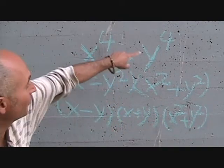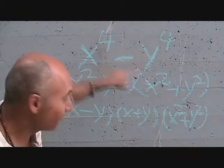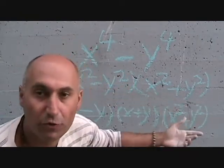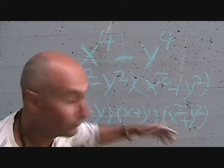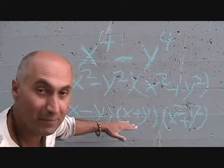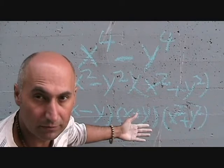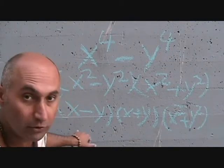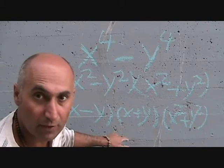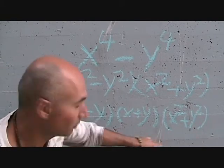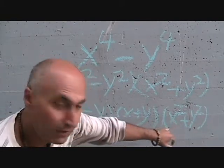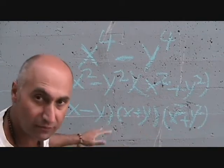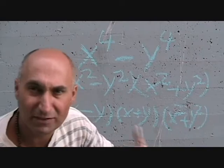So we have three brackets: x minus y, times x plus y, times x squared plus y squared. That is the fully factored form. If the question is worth one mark and you only take it to the first step, you've only done half the job. And you don't want to factor further beyond x and y, because then you'd introduce square roots of x and y, making it far more complicated.